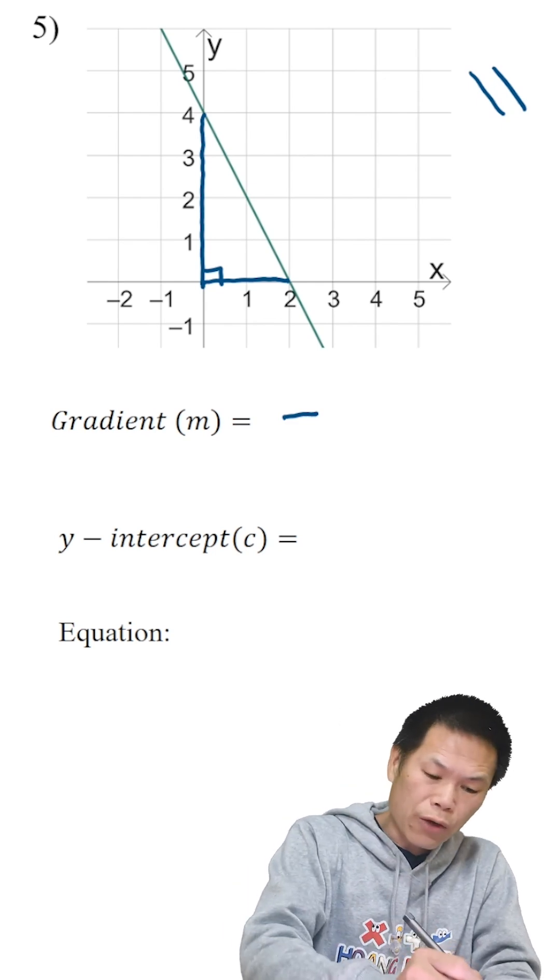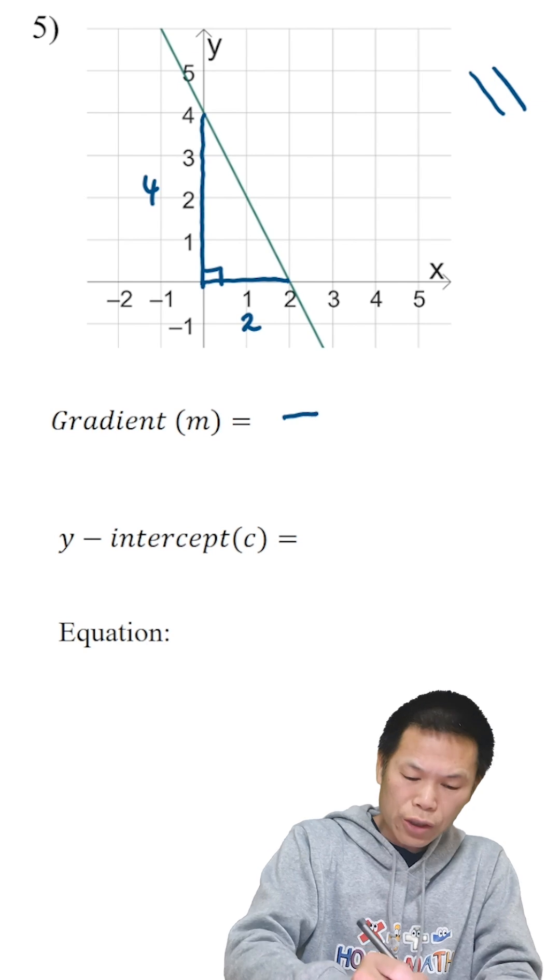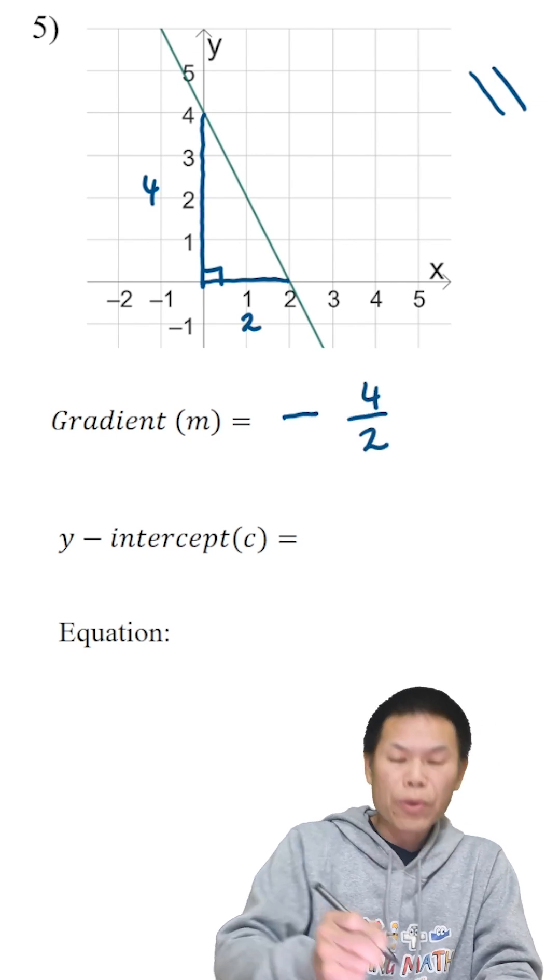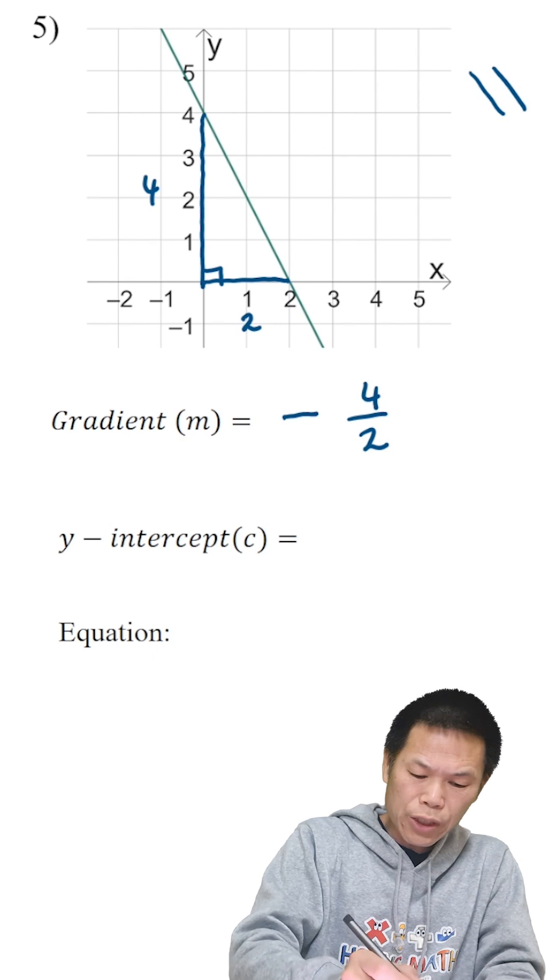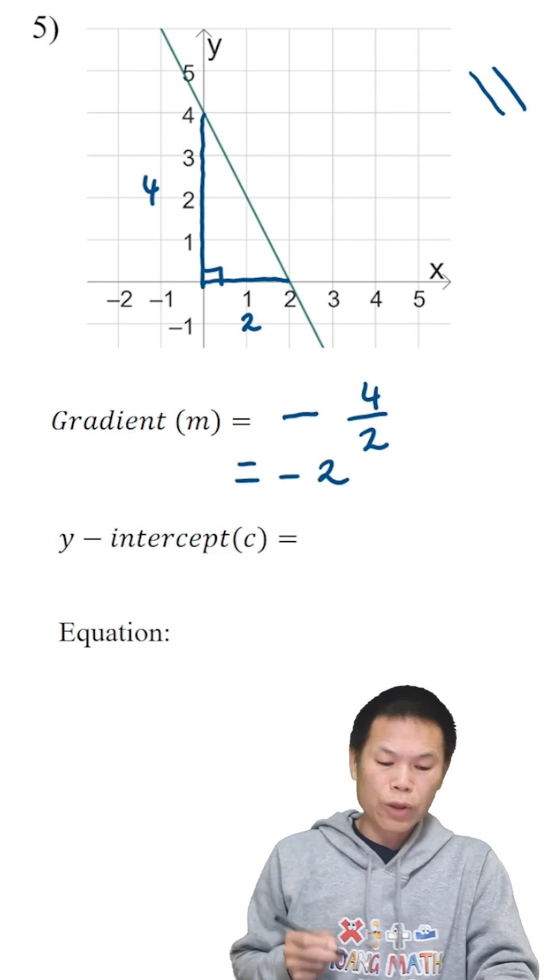We know that the rise is 4, the run is 2. So this means negative 4 over 2. 4 over 2 is 2, so the answer is negative 2. That's your gradient.